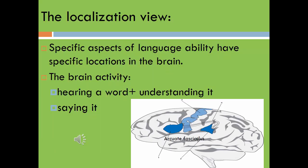There is a view called the localization view. This view states that specific aspects of language ability have specific locations in the brain. For example, hearing a word involves a specific part of the brain, understanding it involves another specific area, and saying it requires yet another specific area located in the brain.